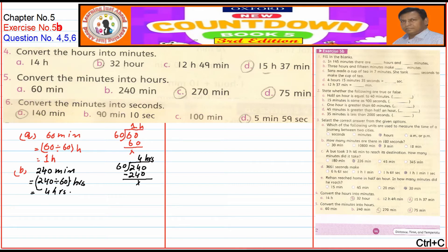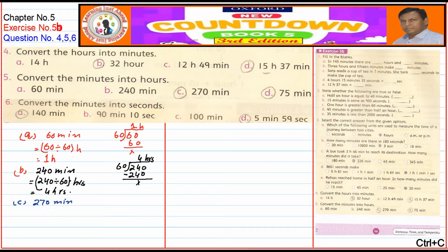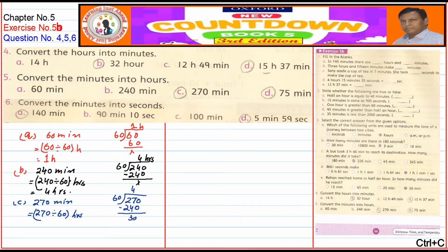Part C: 270 minutes. 270 divided by 60 — 60 × 4 = 240, remainder 30. So the answer is 4 hours 30 minutes. The quotient gives hours and the remainder gives minutes.